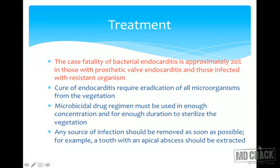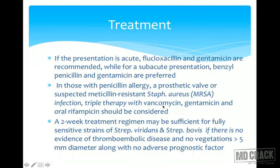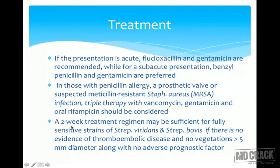For example, a tooth with an apical abscess should be extracted. For acute presentation, flucloxacillin and gentamicin are recommended; for subacute presentation, benzyl penicillin and gentamicin are preferred. In those with penicillin allergy, a prosthetic valve, or suspected MRSA, triple therapy with vancomycin, gentamicin, and oral rifampicin should be considered. A two-week treatment regimen may be sufficient for fully sensitive strains of Streptococcus viridans and Streptococcus bovis if there is no thromboembolic disease.